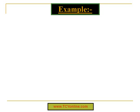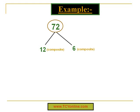Now let's understand this factor tree with the help of an example. We have the number 72 and we need to find the prime factors of this number. 72 is itself a composite number, so it can be written as simply 12 times 6. Here 12 and 6 are both composite numbers, so they can be broken down further — 12 can be written as 4 times 3, while 6 can be written as 2 times 3. Now we know 3 is a prime number.